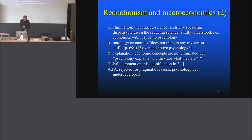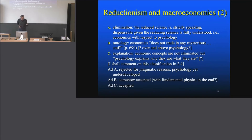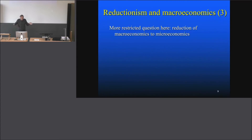Hoover's own position vis-à-vis these three possibilities: he rejects A — elimination — for pragmatic reasons: because psychology is yet underdeveloped. That's purely pragmatic: the reduction isn't possible because the reducing science is not yet developed enough. In principle, that's a good argument. He accepts B — that the ontology is somehow accepted, though one doesn't really know whether he means fundamental physics in the end. And he accepts C: that there is a sort of reduction in that we can understand the concepts of economics by means of psychology. Then he discusses the more restricted question: the reduction of macroeconomics to microeconomics.